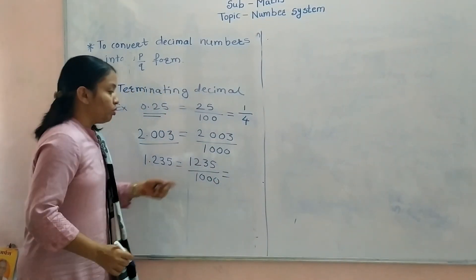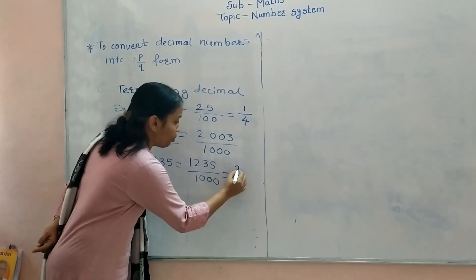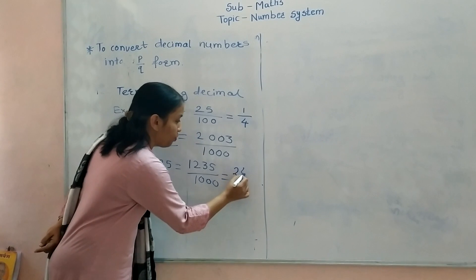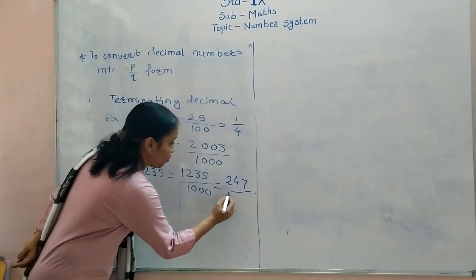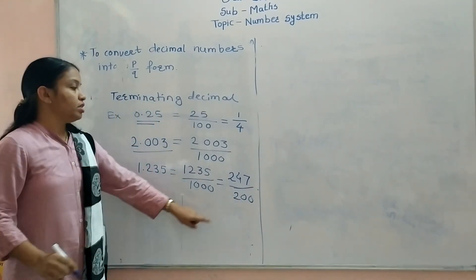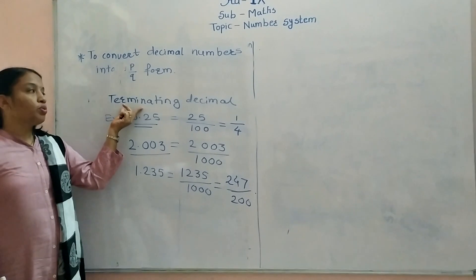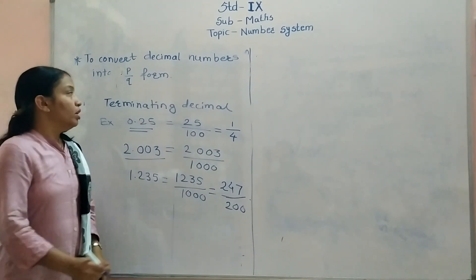You have to reduce this. You know that this number is divisible by 5. So, 5 times 247 equals 1235, and dividing by 5 gives 200. This is the reduced form. So, this is the method how to convert the terminating decimal into the P by Q form.